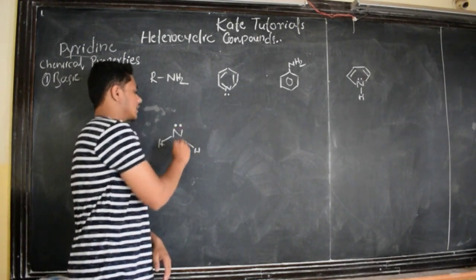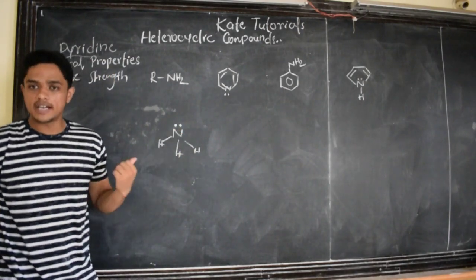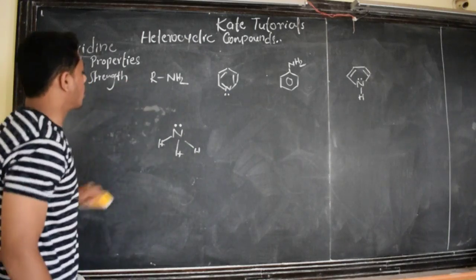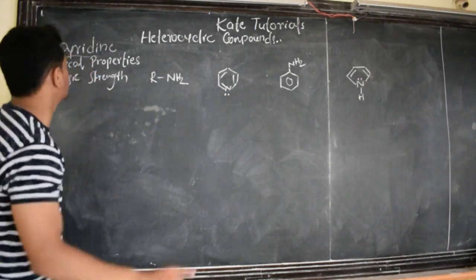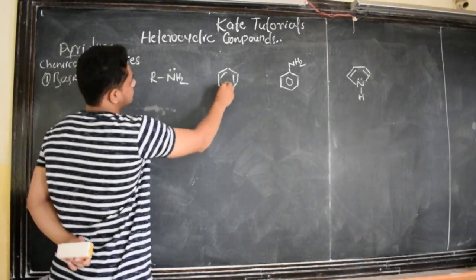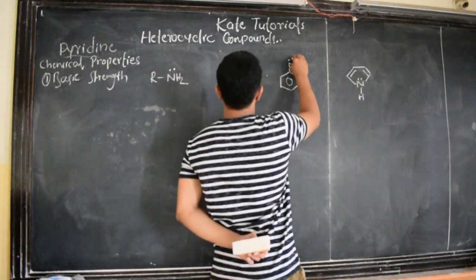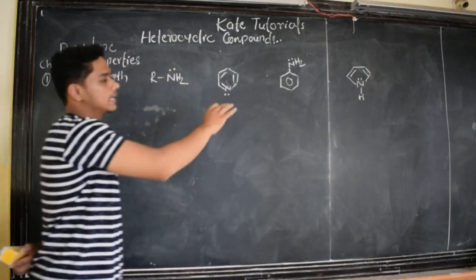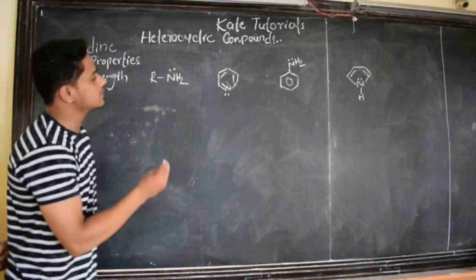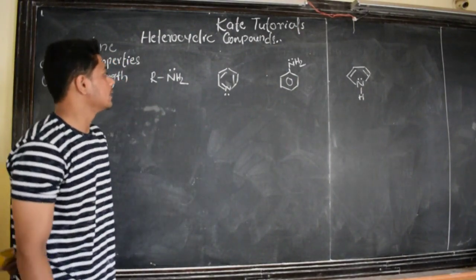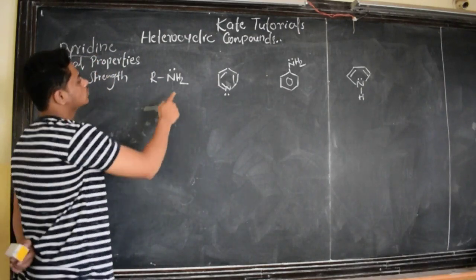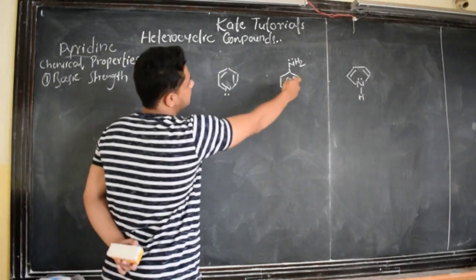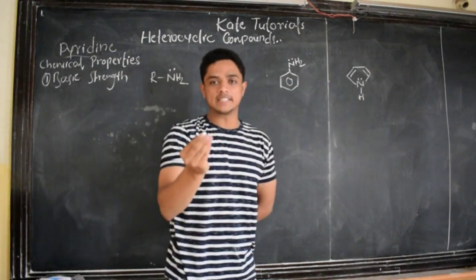Because of these lone pairs, ammonia is basic in nature. All four compounds above have a lone pair of electrons on nitrogen. But the basicity varies. Why does it vary? Because basicity does not depend only on nitrogen — it depends upon the surrounding atoms. Based on the surrounding atoms, the basicity depends.